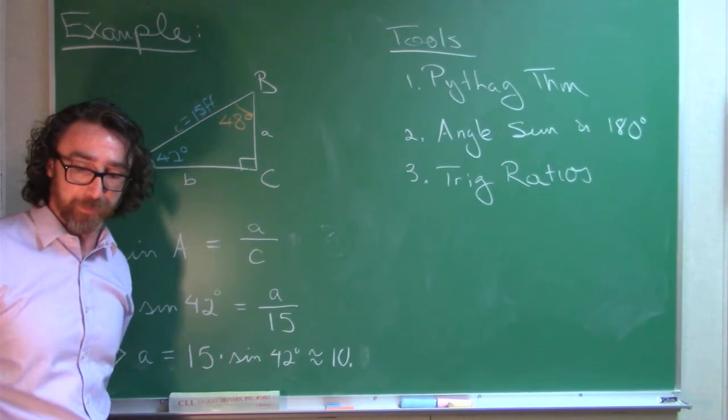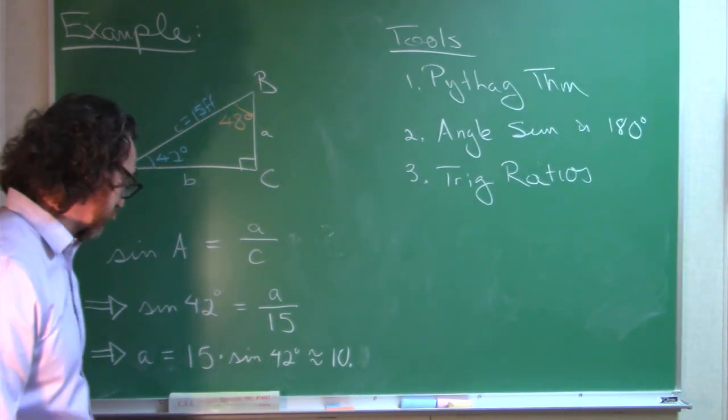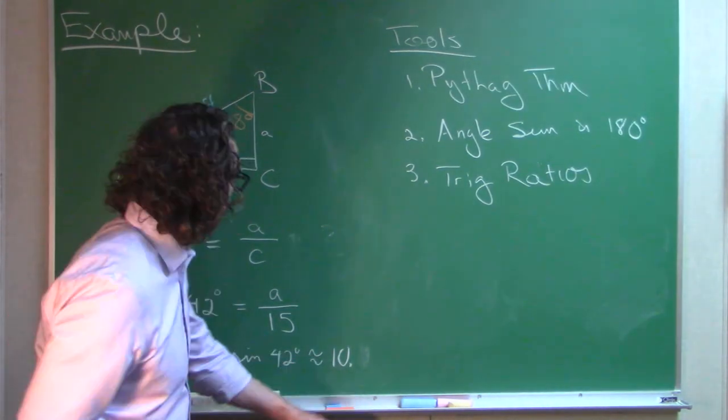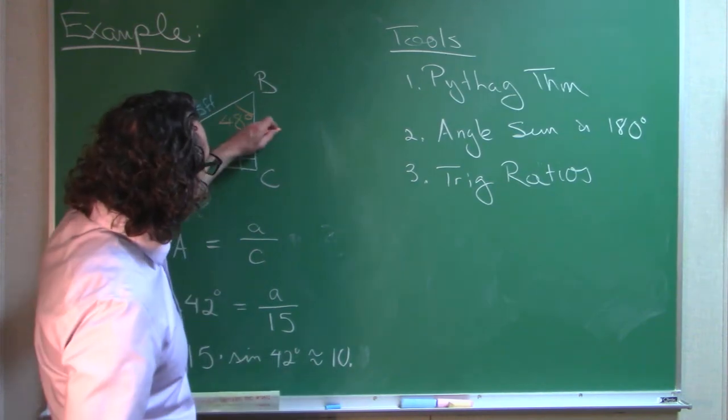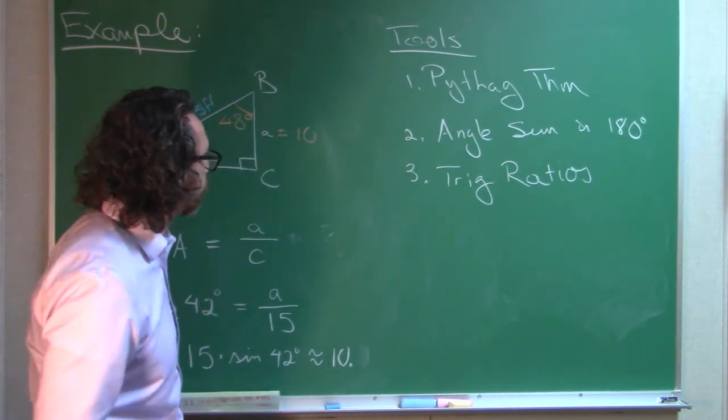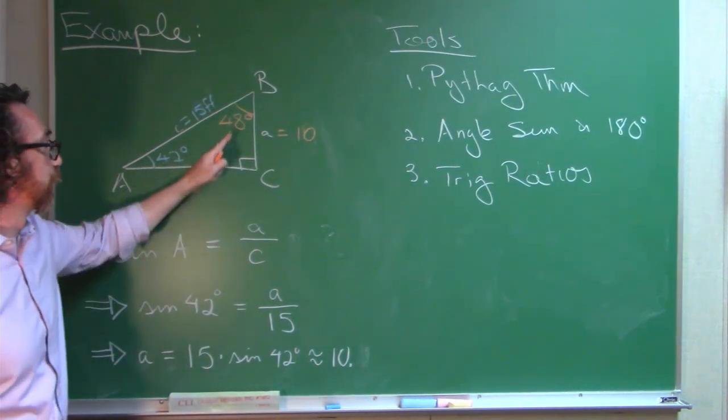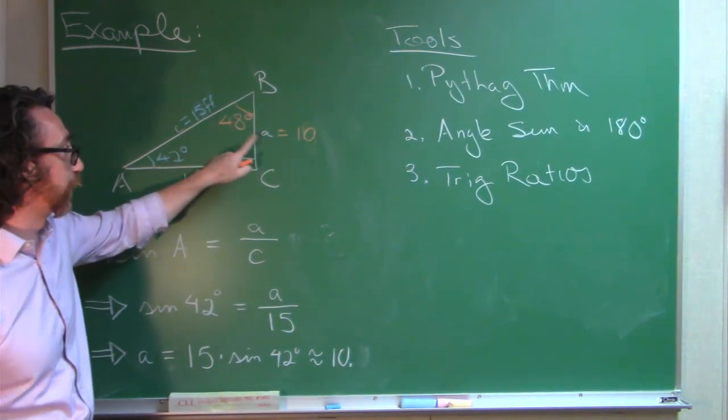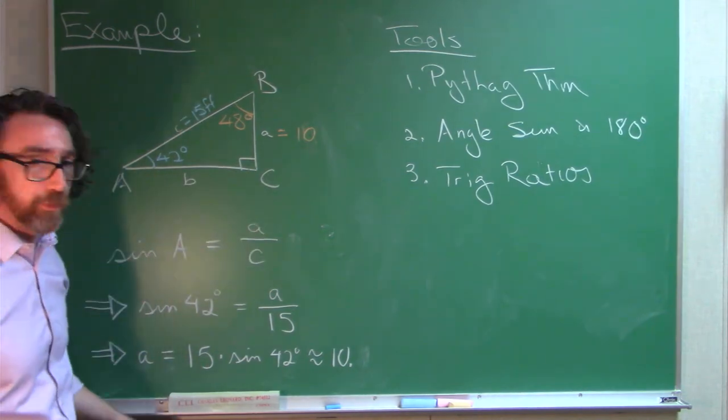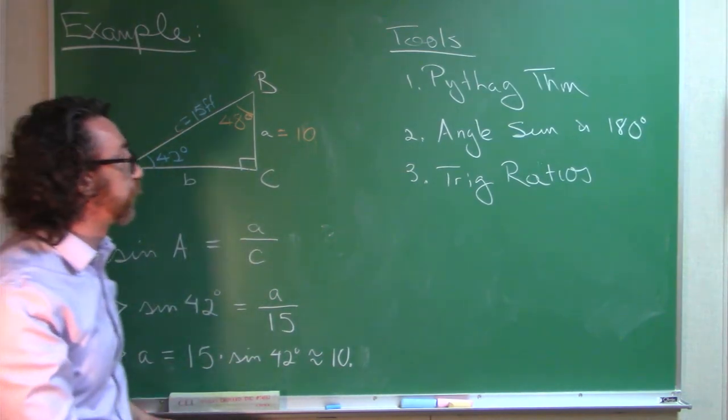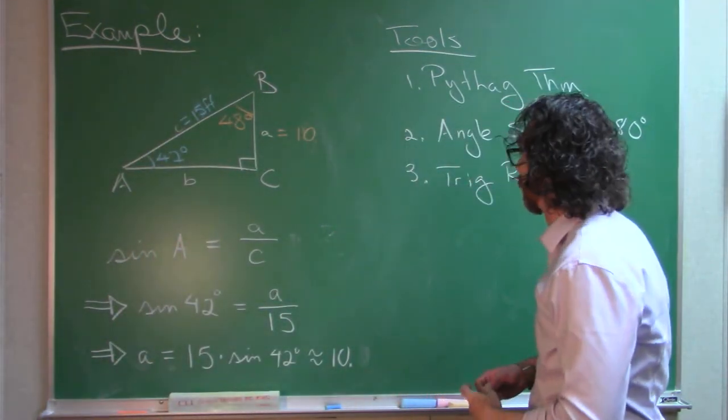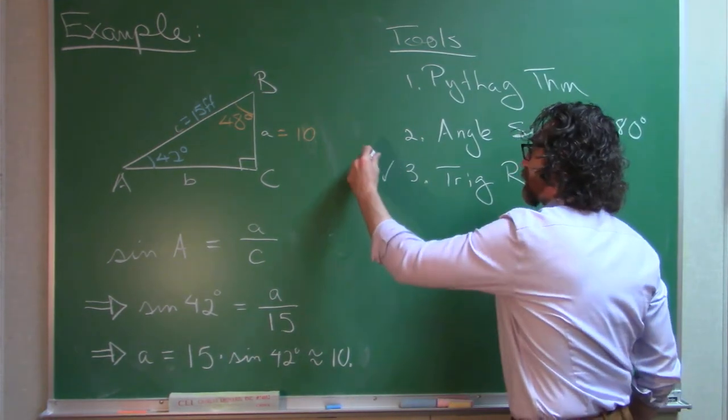You might say, hey Dr. Mack, look at all those numbers on my calculator. Why'd you just write down 10? Significant figures. Two significant figures, two significant figures. My answer should have two significant figures. So 10. I put that little decimal point there to make sure that we know the trailing zero is significant. So we were going to use orange for the stuff that we found. We were given the 42 and the 15. We found that using the angle sum. We found that using a trig ratio.